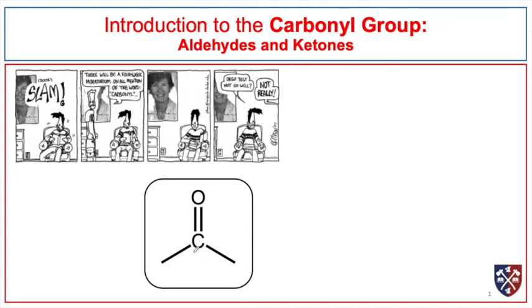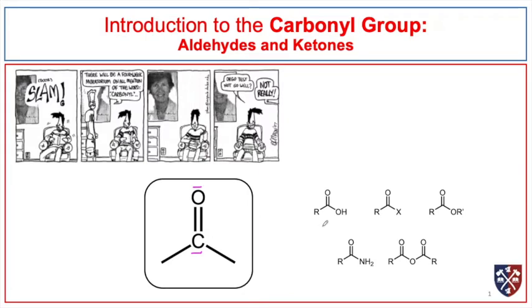The carbonyl group is simply a carbon-oxygen double bond. We find the carbonyl group in many compounds. Here we see some examples. Here's a carboxylic acid, and the rest are derivatives of carboxylic acid. We'll be talking about those shortly.